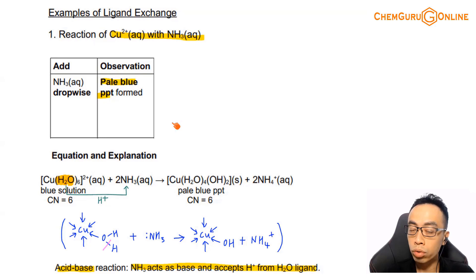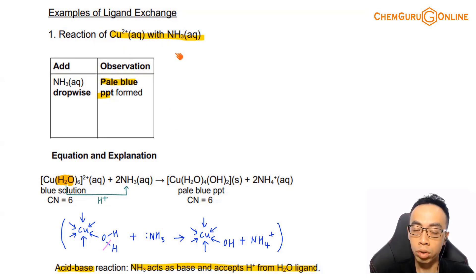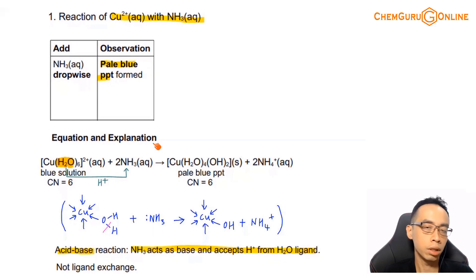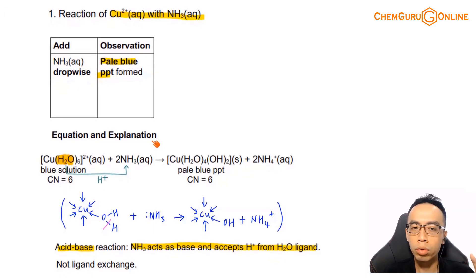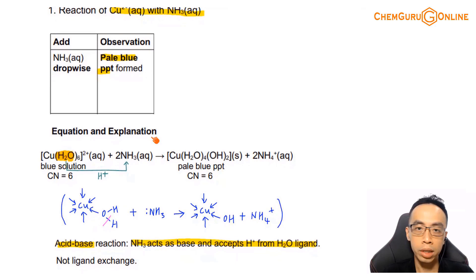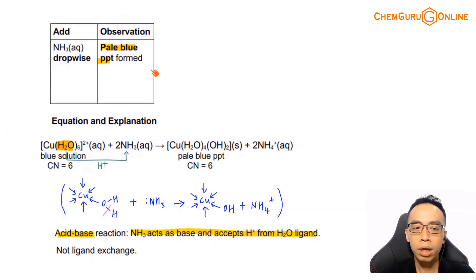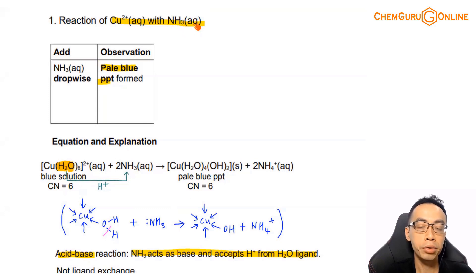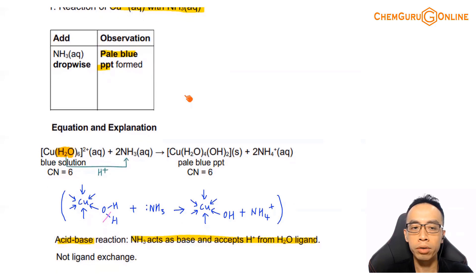This one we need to know because it is explicitly mentioned in the syllabus. Adding ammonia to copper(II) solution: dropwise, it forms a pale blue precipitate. If ammonia is added in excess, the pale blue precipitate dissolves to form a deep blue complex. So there are two things to it. Now the first one — forming the pale blue precipitate — we know this is linked to copper hydroxide. We might think it's Cu2+ aqueous reacting with OH- from ammonia acting as a base.